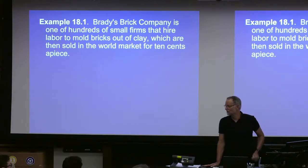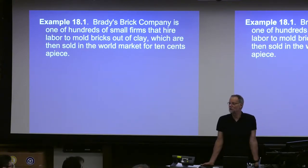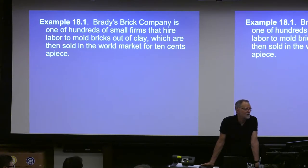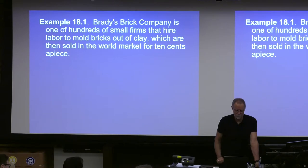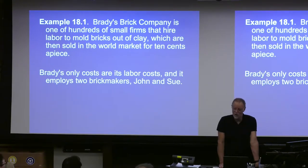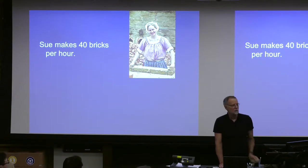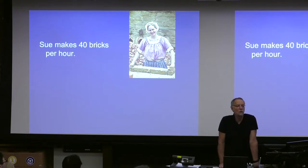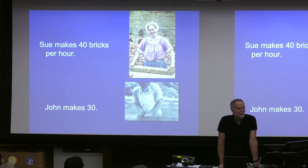Most firms do more than that — they have capital equipment, management teams, all sorts of stuff. This firm has nothing, just to keep extraneous complications out of the example. It's got two employees and no other costs other than the employees. The two employees are John and Sue, the brickmakers. Sue makes 40 bricks per hour — that's her rate at which she's able to produce bricks — and John makes 30.